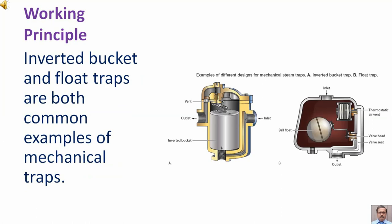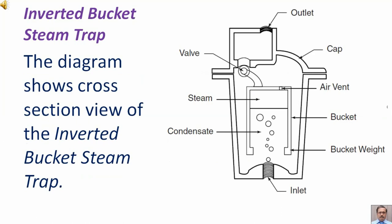Inverted bucket and float traps are both common examples of mechanical traps. The diagram shows cross section view of the inverted bucket steam trap.